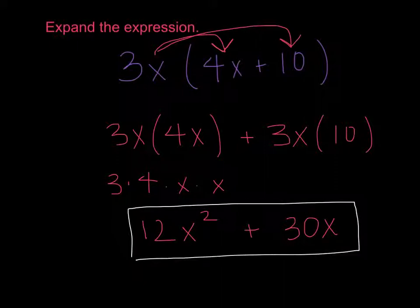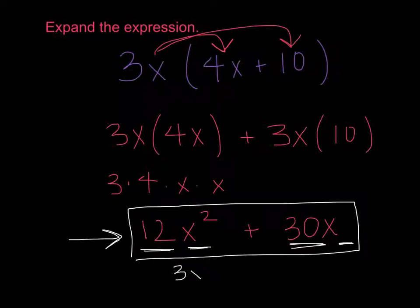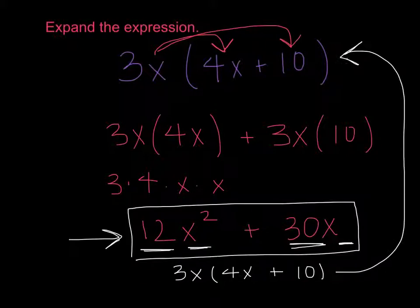So our expanded expression is 12x squared plus 30x. Have you noticed that the distributive property is the opposite of factoring an expression? Because if I had to factor this expression, the greatest common factor would be 3x. I can pull a 3 and an x out of the 12x squared, and a 3 and an x out of the 30x. So if I factored out 3x, I would be left with 4x plus 10 — which is what we started with. Factoring is the opposite of distributing.